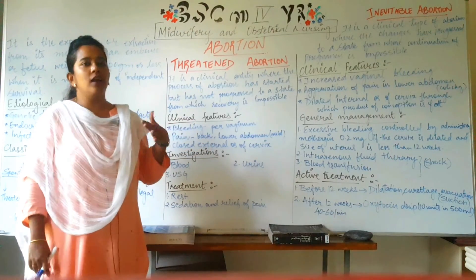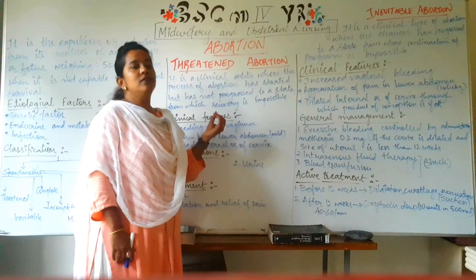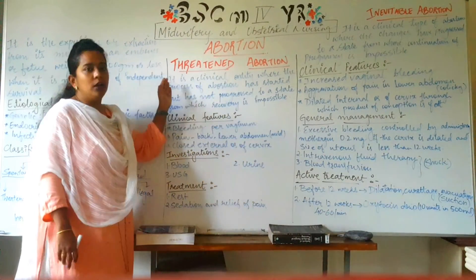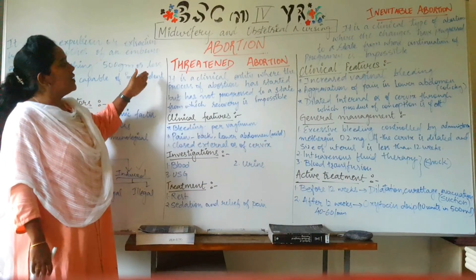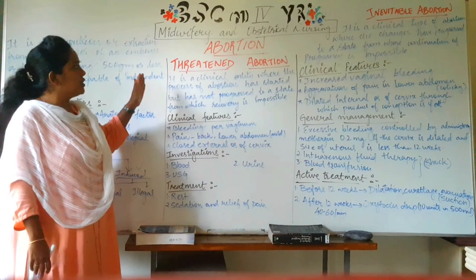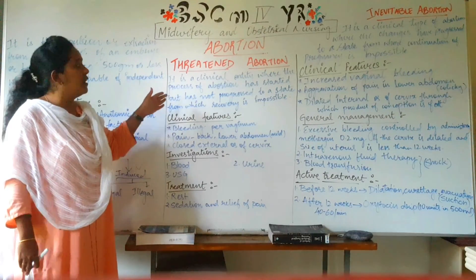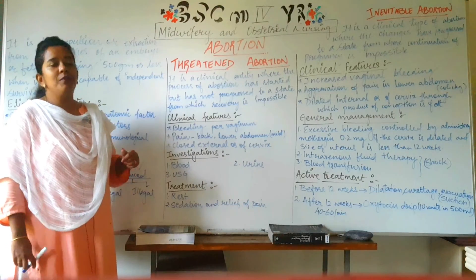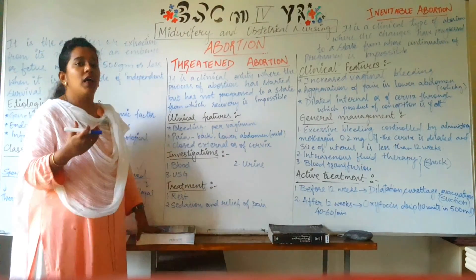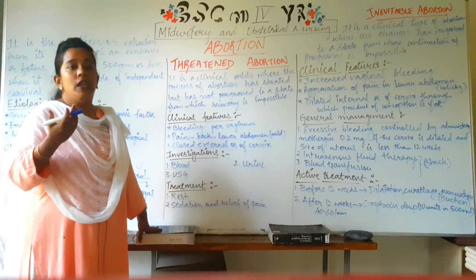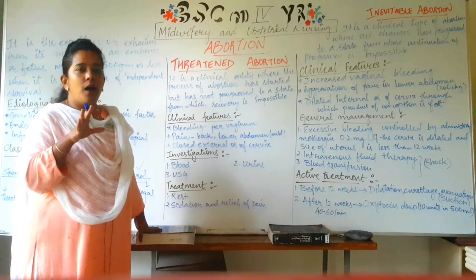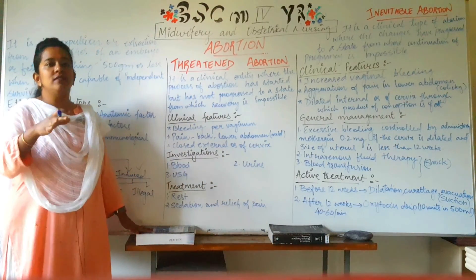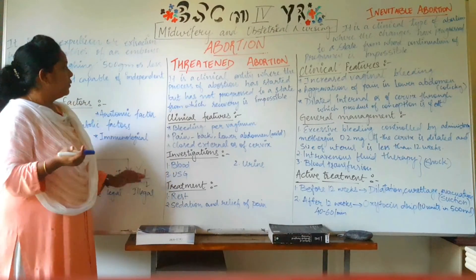In today's session, we will study two abortions under spontaneous abortion: threatened abortion and inevitable abortion. Threatened abortion is defined as a clinical entity where the process of abortion has started but has not progressed to a state from which recovery is impossible. This means the process has not advanced far enough to make recovery impossible — recovery is still possible with active treatment, and the pregnancy can be saved.